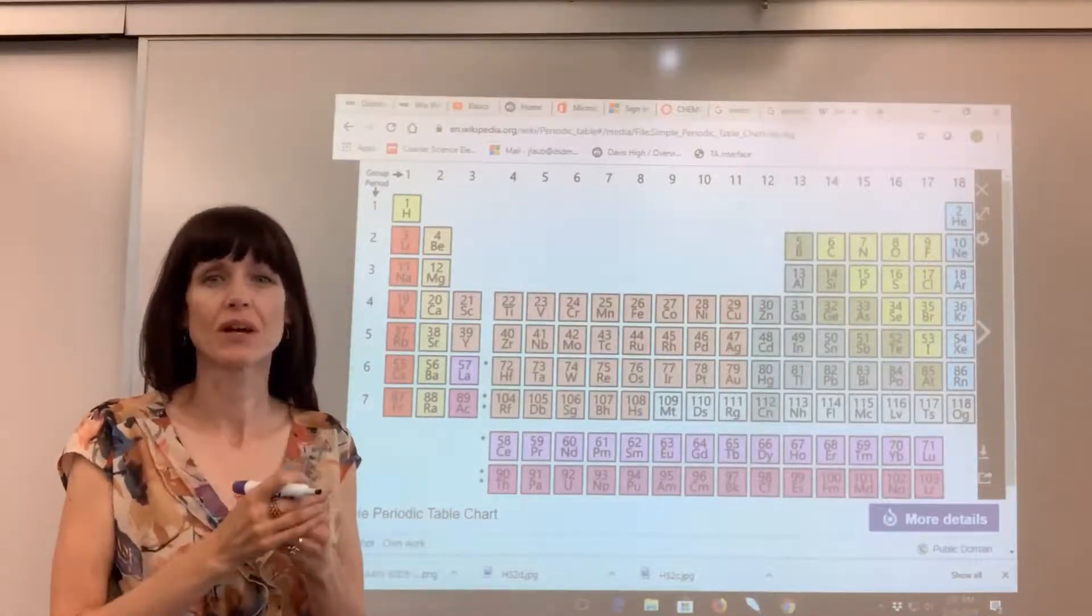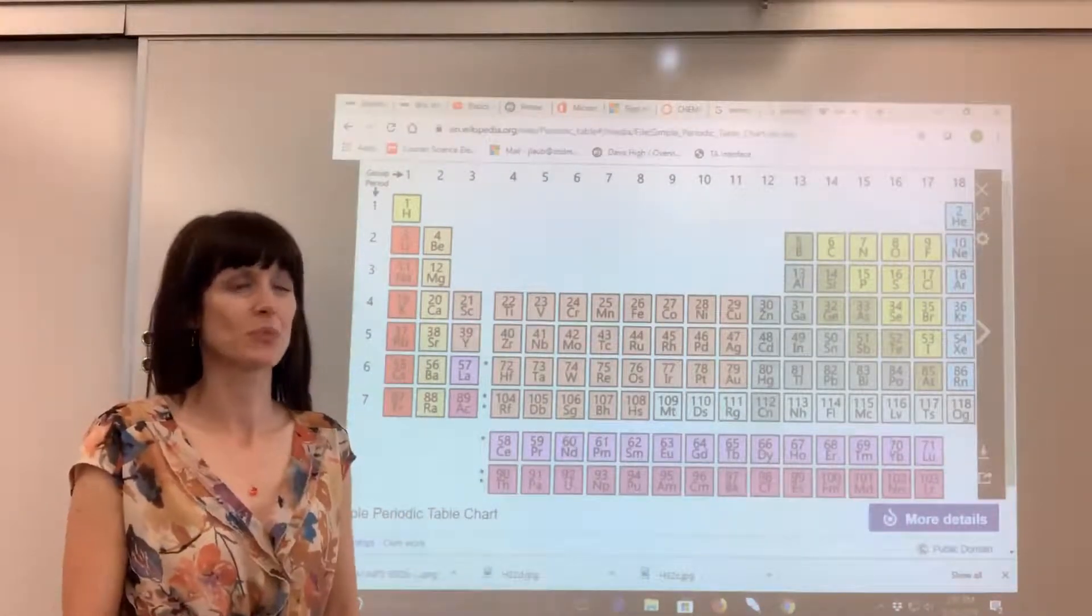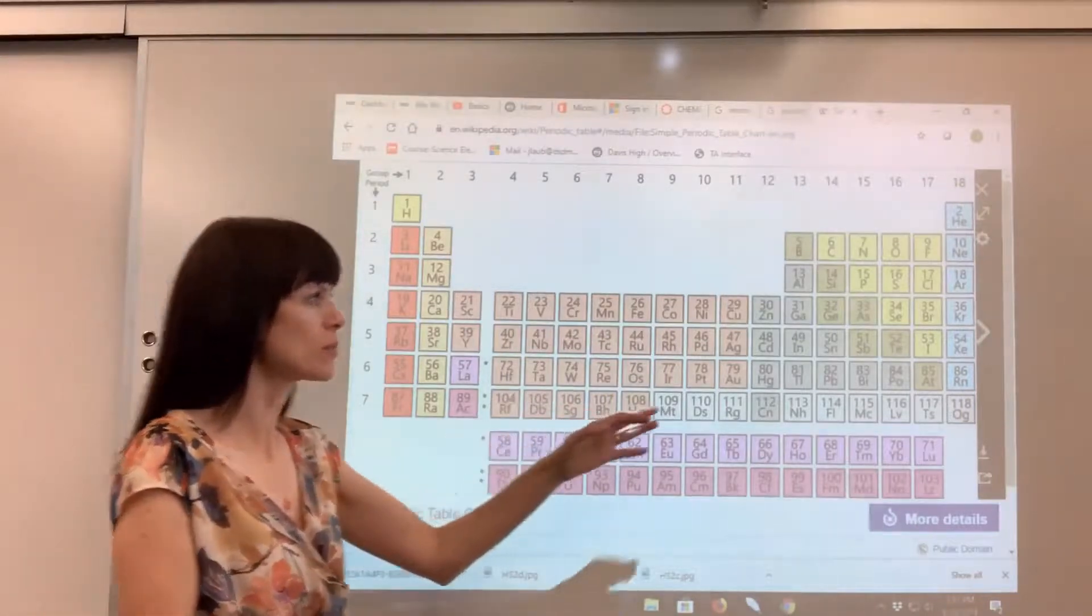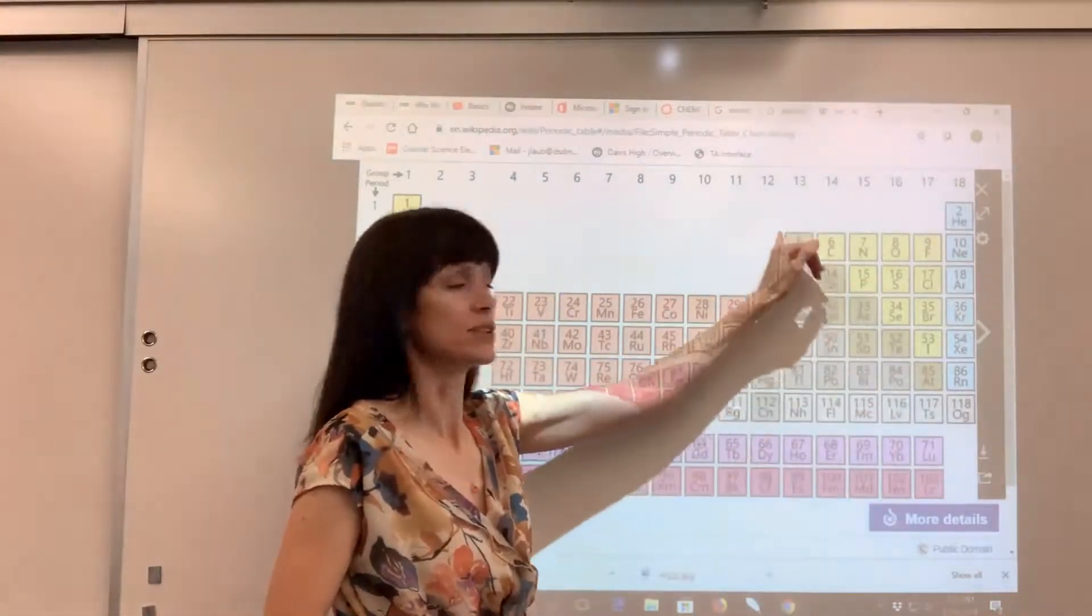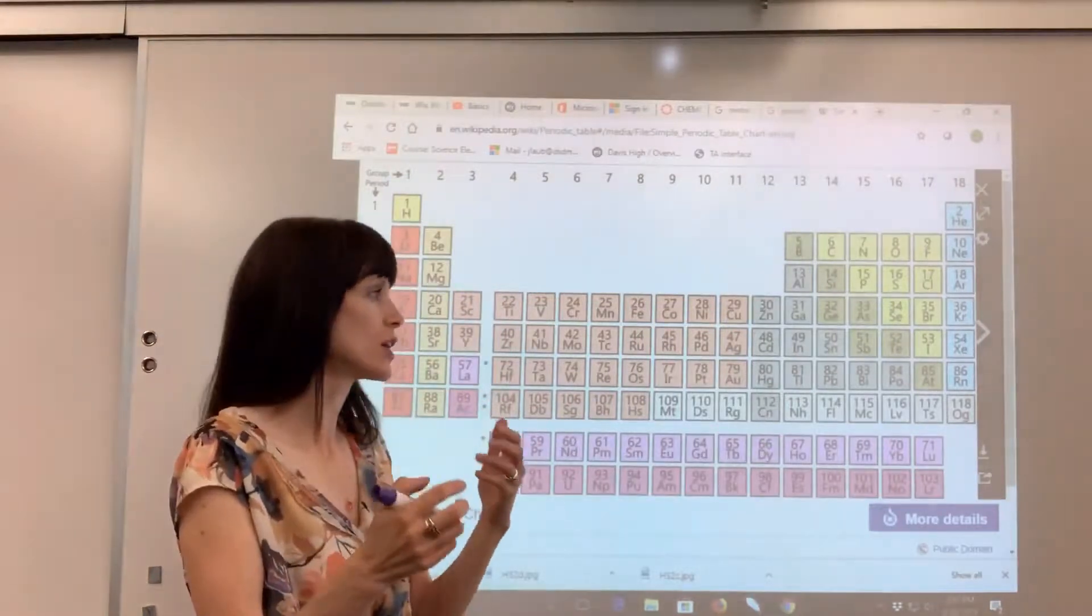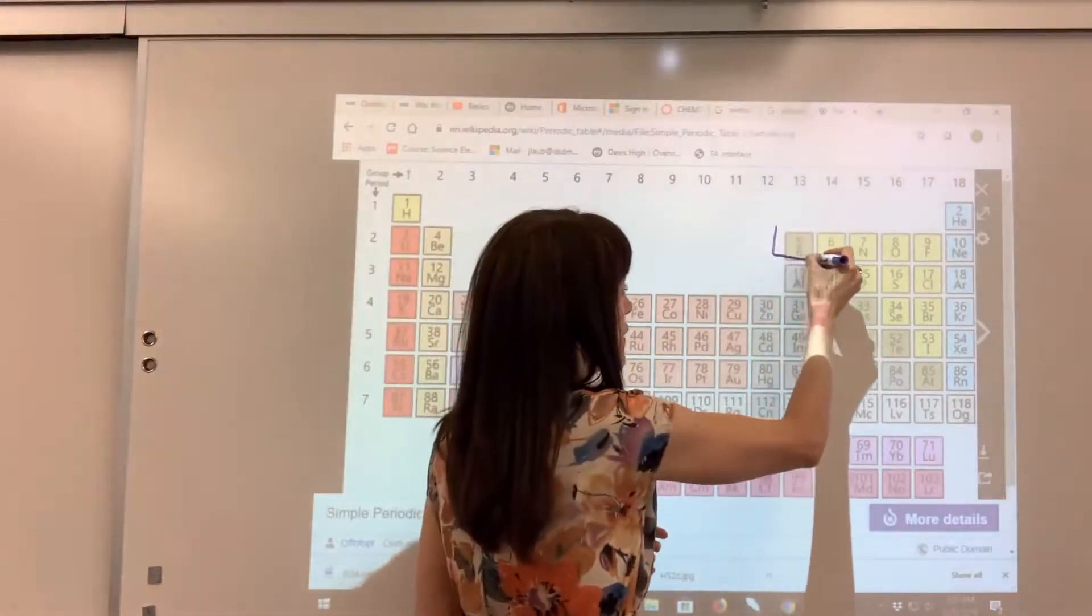Looking at the periodic table, let's talk briefly about the types of elements that you find on the periodic table. I want to point out first this division section. You can see that it's a little bit different color of green. I'm going to go ahead and outline it for you.